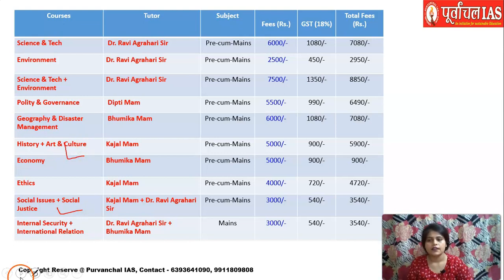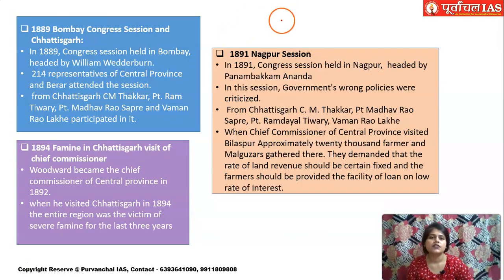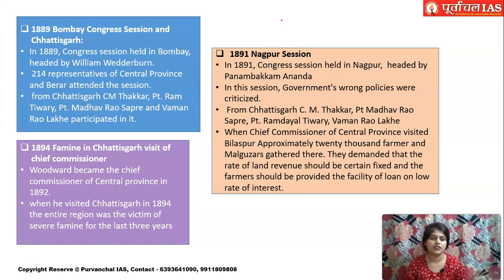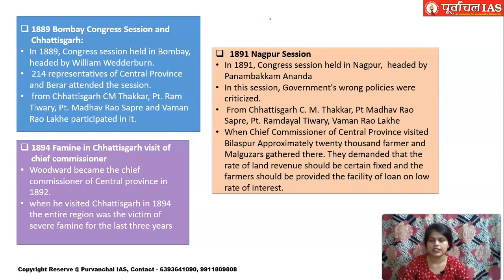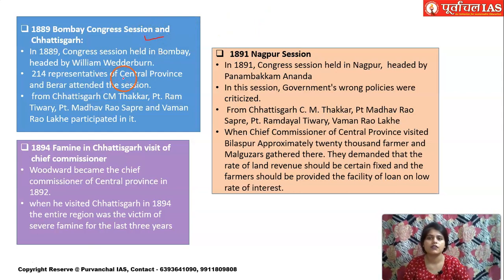When we talk about the Indian freedom struggle, all of us know that to get independence we had a long history of struggle. From 1885, it was the establishment of Indian National Congress. As far as Chhattisgarh is concerned, it was at that time a part of Central Province. In 1889 a Congress session was held at Bombay, headed by William Wedderburn.